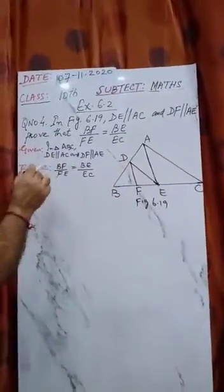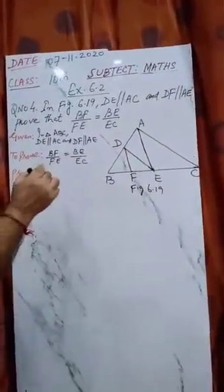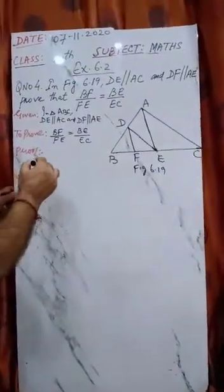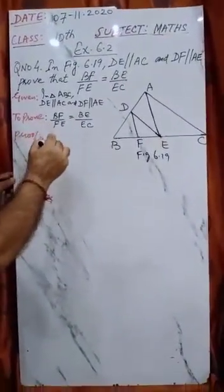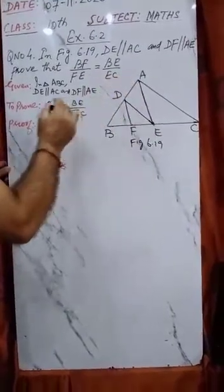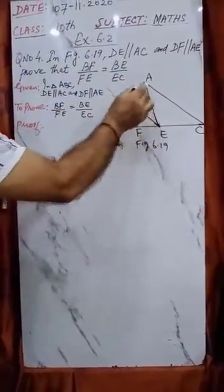So given, you have to prove, what you have to do. Let's start with proof. It is very easy. First of all, we will take a triangle in which DE is parallel to AC.